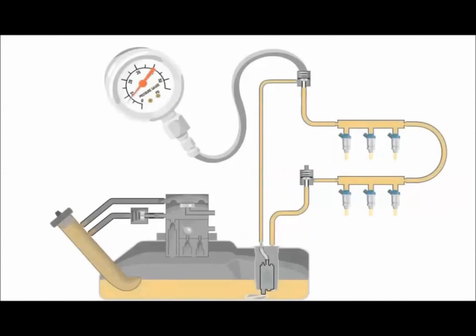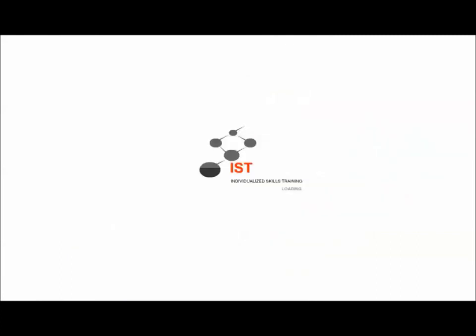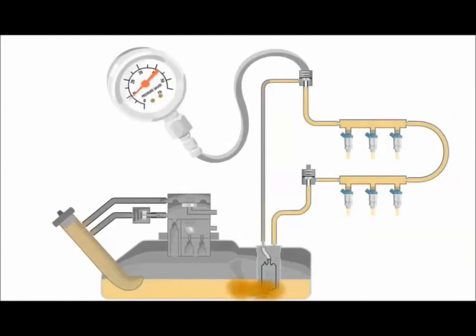To determine if the pressure regulator is stuck open, relieving too much pressure, pinch close the return line with swivel jaw hose-pinching pliers. If pressure rises, the regulator is likely at fault. If the pressure regulator is okay, the fuel filter and strainer, suction filter, should be replaced.